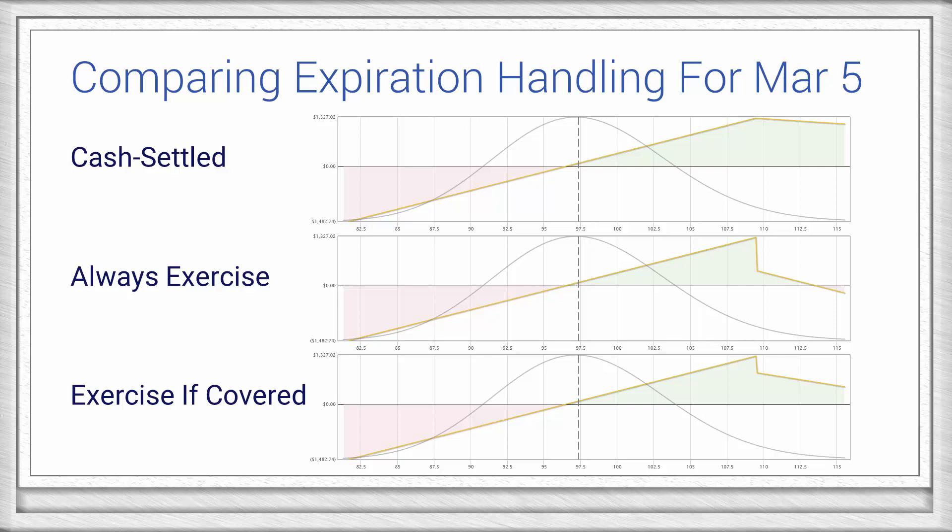One additional benefit of the Expiration Handling feature is that it allows you to easily model how each strategy would impact a book at a future date. You can easily see that the performance is identical for each strategy if the stock stays below the call strike. However, if the stock rises above the call strike by expiration, the Cash Settle will result in a bullish position, whereas the Always Exercise strategy would result in a bearish position. Keep in mind that these particular results are due to the book we're using in this example, so it will vary.